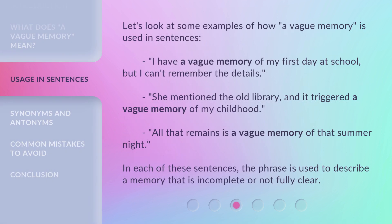Let's look at some examples of how a vague memory is used in sentences. I have a vague memory of my first day at school, but I can't remember the details. She mentioned the old library, and it triggered a vague memory of my childhood. All that remains is a vague memory of that summer night. In each of these sentences, the phrase is used to describe a memory that is incomplete or not fully clear.